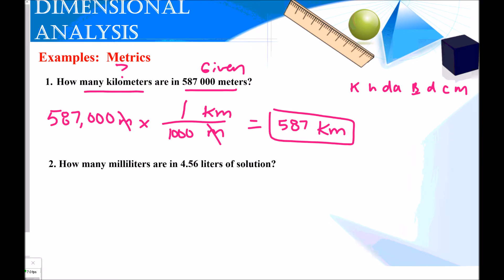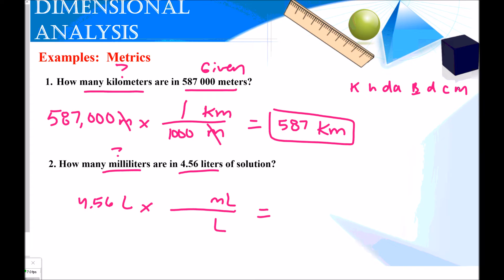How many milliliters are in 4.56 liters of solution? The 4.56 liters is the given and milliliters is the unknown. I need a conversion factor connecting liters to milliliters. Liters goes on the bottom to cancel. A liter is the base unit and is bigger than a milliliter, so it gets the one. There are 1,000 milliliters in a liter. Liters cancel, and 4.56 times 1,000 gives 4,560 milliliters as the final answer.